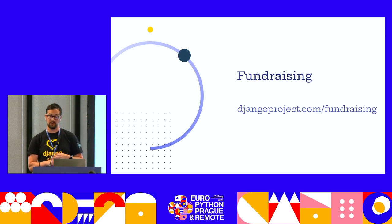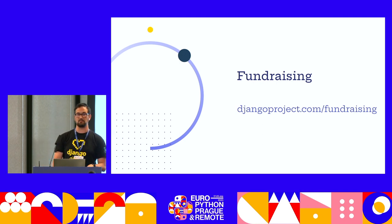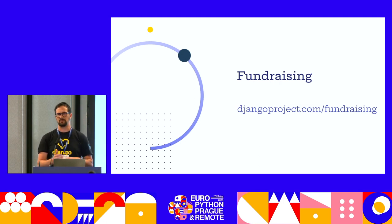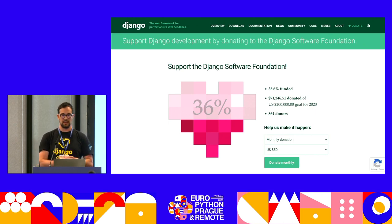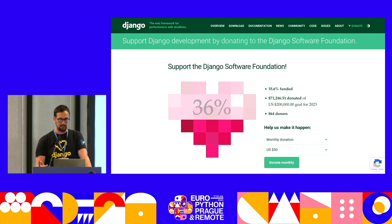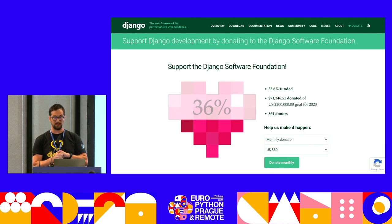The last section I want to show you is very important for the foundation — it's the fundraising section, where you can donate money to the foundation, which then distributes it to different conferences, Django Girls workshops, and other initiatives. In this section, you can find the list of all sponsors that have donated, and you can donate yourself. You can do a one-time donation or a recurring one. The user experience on this page is not the best, but you can also try to donate through the GitHub section — and we are working to improve this page.